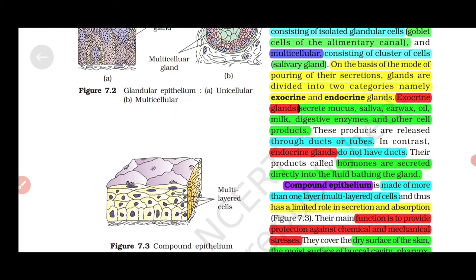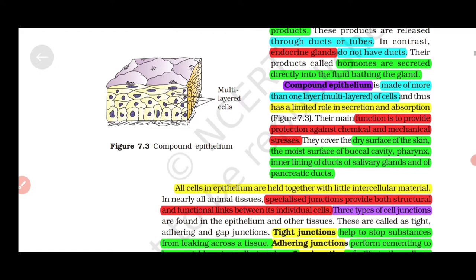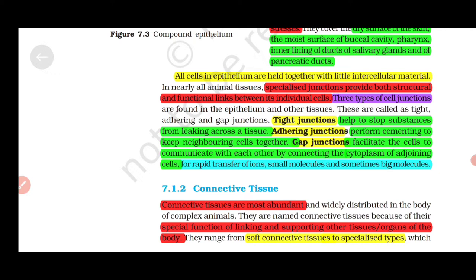Exocrine glands secrete mucus, saliva, earwax, oil, milk, digestive enzymes, and other cell products through ducts or tubes. Endocrine glands do not have ducts. Hormones are secreted directly in the fluid bathing the gland. Compound epithelium is made of more than one layer of cells with limited role in secretion and absorption. Its function is to provide protection against chemical and mechanical stresses. It's found in dry surface of skin, moist surface of buccal cavity, pharynx, inner lining of ducts of salivary glands and pancreatic ducts.